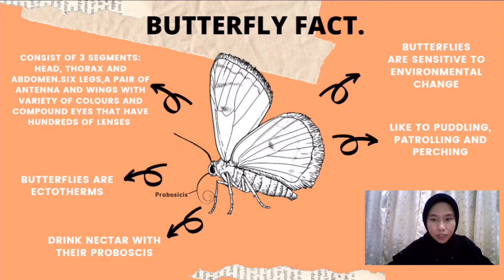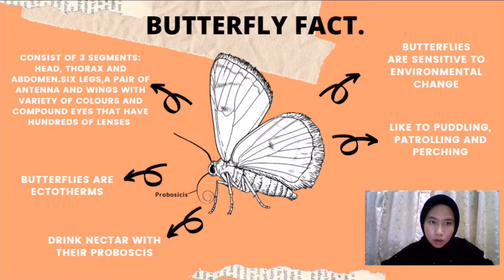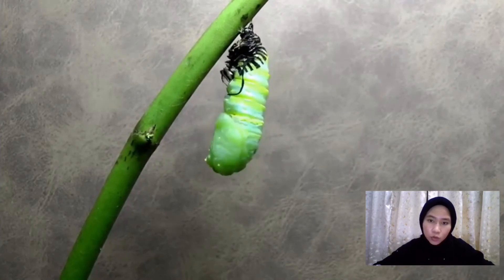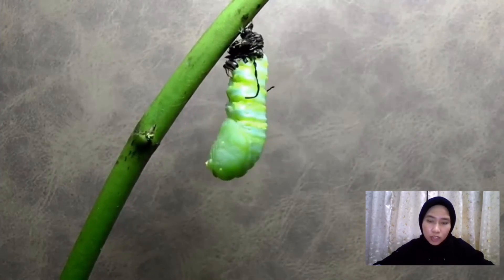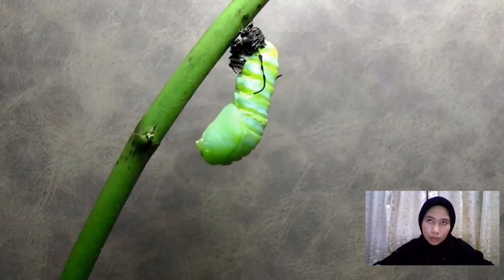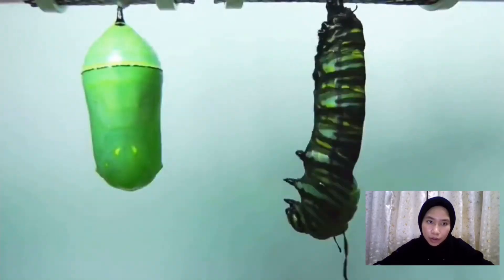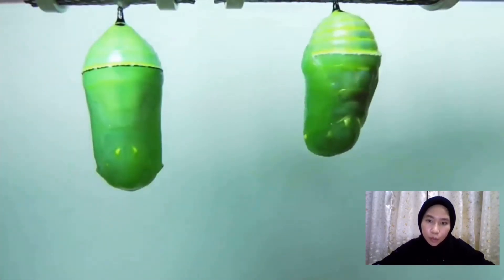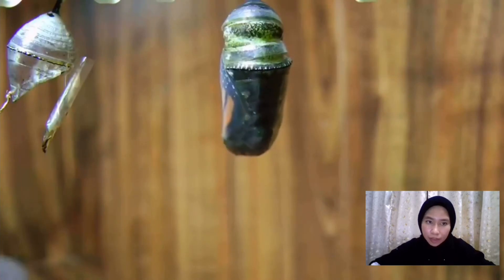Most puddlers are male butterflies because the salt and nutrients contained in the puddle are needed for successful mating. Here is a short video of the butterfly life cycle. Butterflies go through four stages in their life cycle: starting from laying small round eggs on leaves, becoming a caterpillar, then a pupa, and finally an adult butterfly.